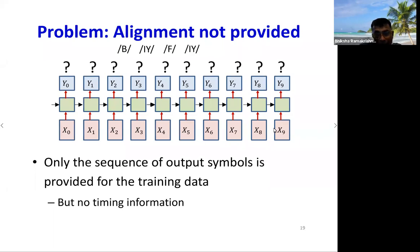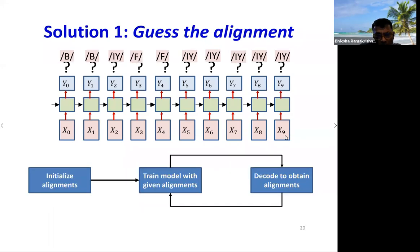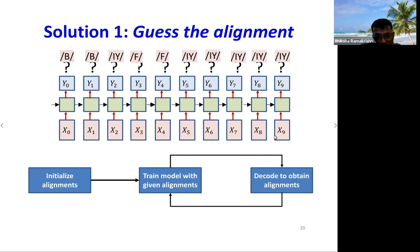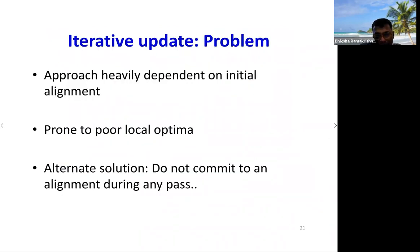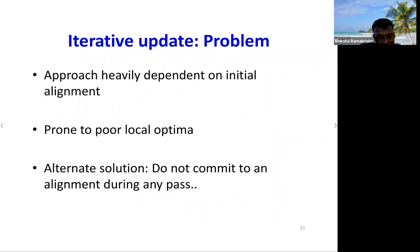The tougher case is when the output sequence is given but the alignment is not provided. One approach is to guess the alignment, initialize it, train the model, then re-estimate the alignment using Viterbi alignment, and iterate. This is called Viterbi training. However, the Viterbi training procedure is prone to poor local optima because it is heavily dependent on the initial alignment — if that is bad, the final solution will also be poor.